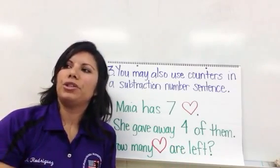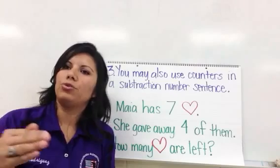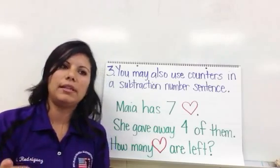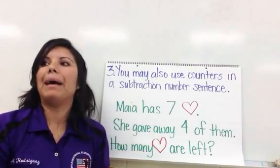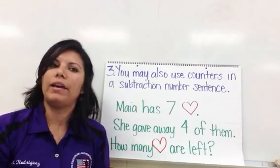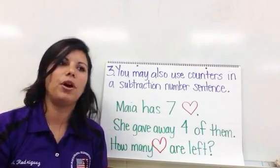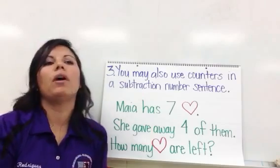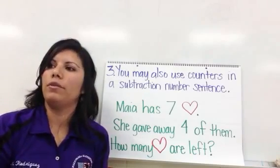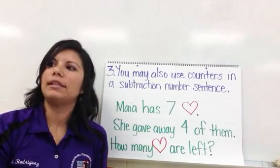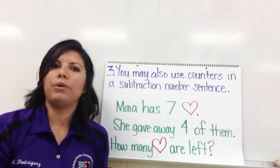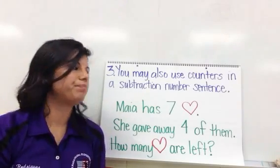and then you transfer it onto your paper. You draw your 7 hearts. Remember, Maya gave away 4 of them, so you can cross out 4 of those hearts. Whatever you have left over that you didn't cross out — that would be your answer.